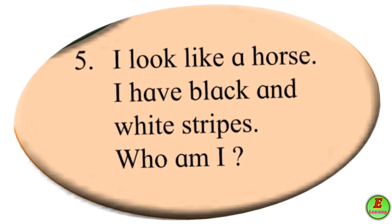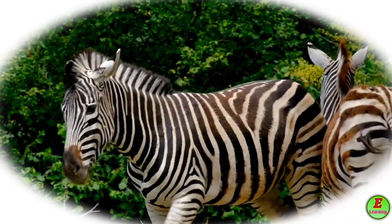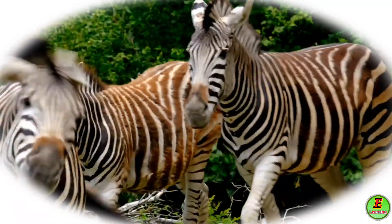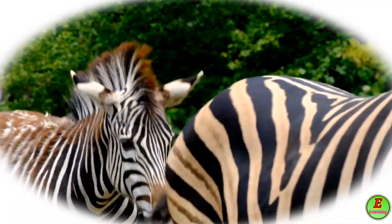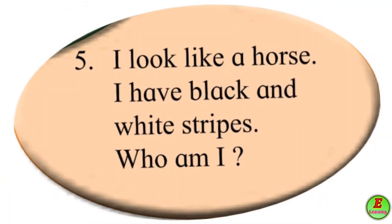Fifth riddle: I look like a horse — mi ghodyasarkha dikhto. I have black and white stripes — majhya angavar black and white patte ahe. Who am I? Answer is Zebra — Zebra.